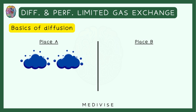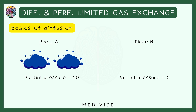Let's say Place A has some gas. You know that if there are different gases in a place, they are going to exert partial pressure. So let's say the partial pressure being exerted by this gas is 50. Now in Place B, there is no gas, so the partial pressure here will be 0. Diffusion is going to take place since the concentration gradient is there — the gas moves from higher concentration to lower concentration, from Place A to Place B. This happens until equilibrium is reached, meaning when the partial pressure of Place A and Place B become equal, then only the diffusion is going to stop.